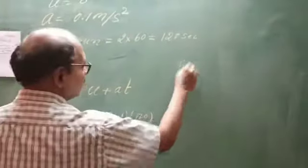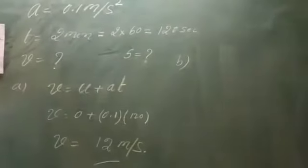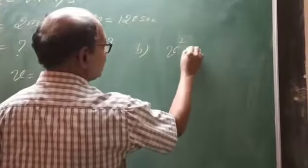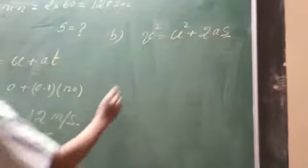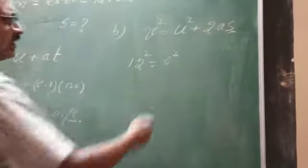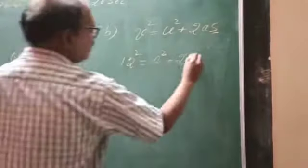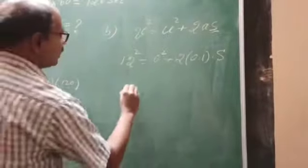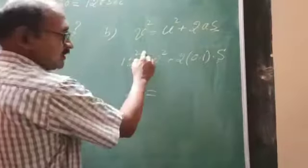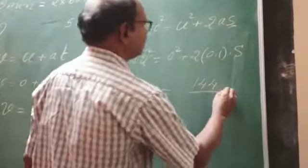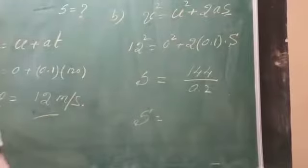Now we find the distance S. Using the equation of motion, V squared is equal to U squared plus 2AS. V is already identified as 12, so 12 squared equals 144. U squared is 0. A is 0.1. So 144 equals 2 into 0.1 into S, which gives 144 divided by 0.2. Therefore S is equal to 720 meters.